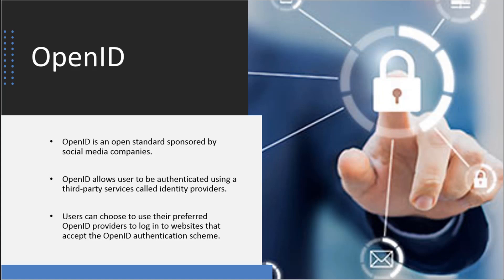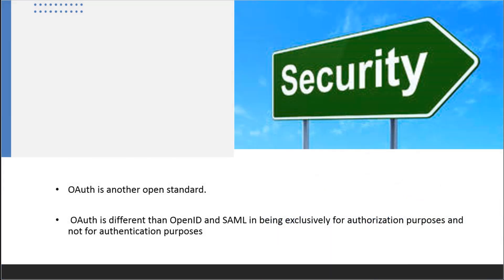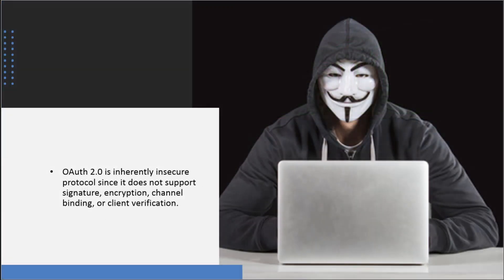We don't want to use OpenID for our corporate cloud resources. When it comes to OpenID, there are certainly a lot of vulnerabilities. Phishing attacks are going to be very common, as are authentication flaws. It is not meant to be an enterprise solution. Now, open authentication — the current standard is 2.0 — is somewhat different than OpenID and SAML. This is not really used for authentication; it is really meant for authorization. When it comes to open authentication, this is still not really what would be considered a very secure protocol, however it's commonly used when applied in the right scenario the right way.